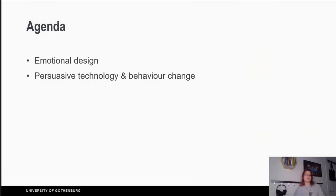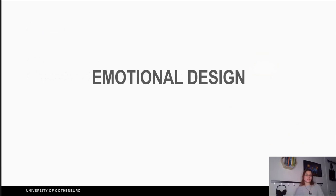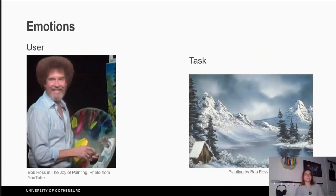Let's start with emotional design. With our design, we make users feel different emotions. Often times users get frustrated because of our design — this happens either because the system acted in a way that the user didn't expect, or because the system gets in the way between the user and the user's task, exactly like in this slide with Bob Ross, a famous TV painter.